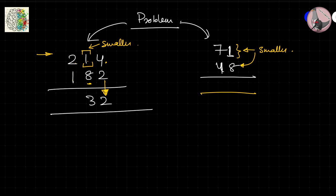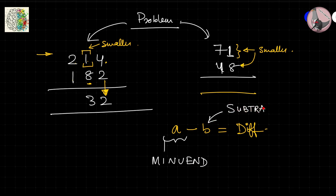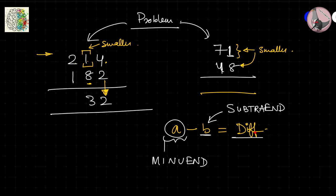Let me give you the nomenclature of subtraction. If a minus b equals some difference, then a is called the minuend (m-i-n-u-e-n-d), b is called the subtrahend, and their result is called the difference. This is Latin — the full names are 'minuend numerals' and 'subtrahend numerals' — but you just need to know minuend and subtrahend.